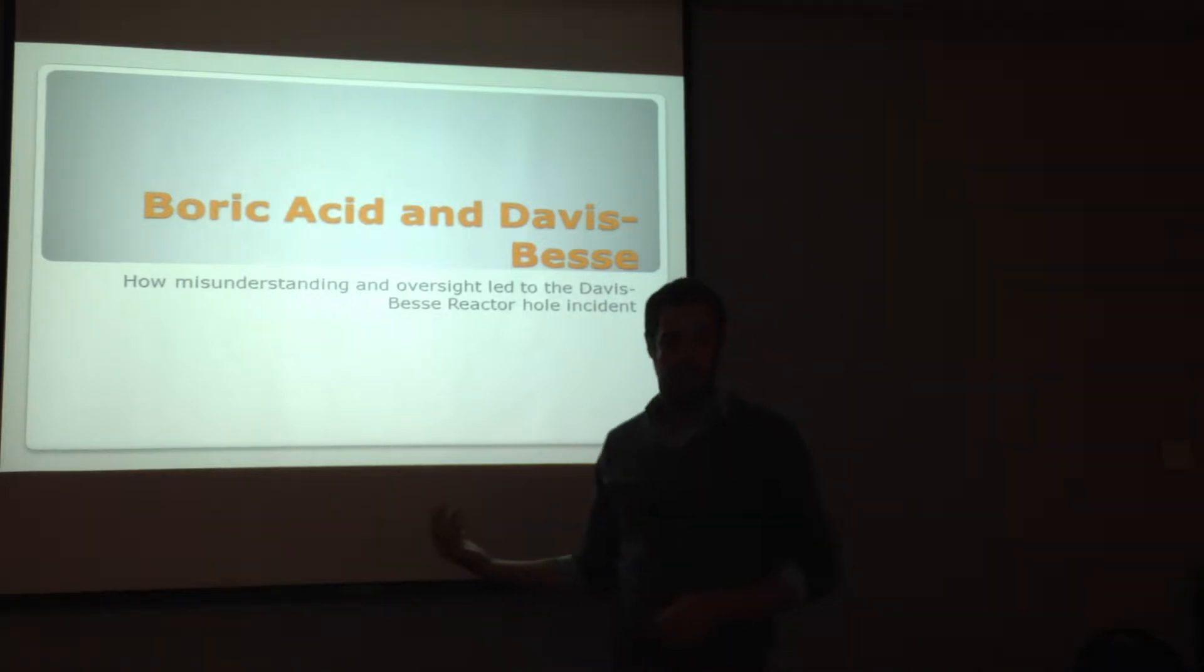After this point, I'll be referring to the reactor pressure vessel head as RPV because I have a hard time saying that. Basically, we're going to talk about how boron is introduced to the system and introduced to the atmosphere and was introduced to the top of the head to create the corrosion that occurred in the incident at Davis-Besse.